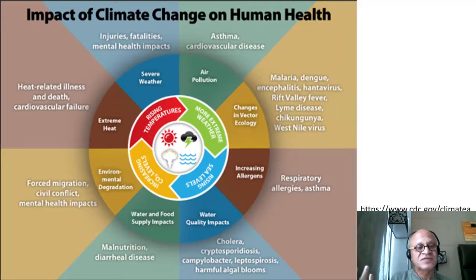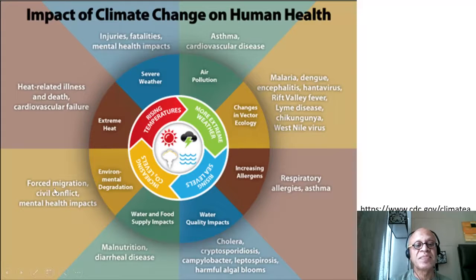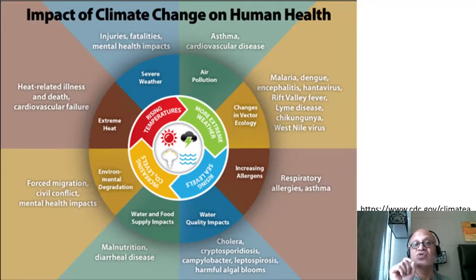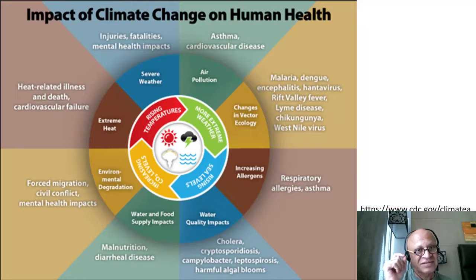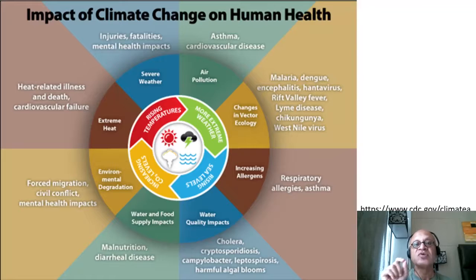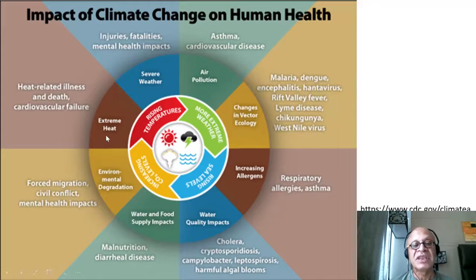Mental health impacts are also serious. It is now known that PM 2.5 — very fine particulate matter — can actually enter the bloodstream and affect the brain. Evidence of PM 2.5 effects has been found in dogs, where animals reportedly become more aggressive. You can imagine how many pathways exist for these kinds of impacts on human mental health.